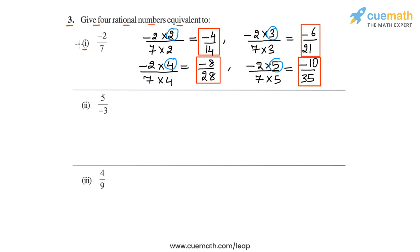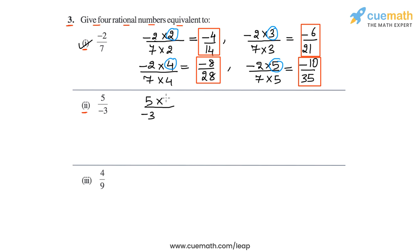Now similarly, let's do part two. The rational number in part two is five by minus three. And once again, to write any equivalent rational number for this number, we just need to multiply its numerator and denominator by the same integer multiplier. So let's again take the multipliers two, three, four, and five. So five by minus three — we multiply both numerator and denominator by two — this will give us 10 by minus six.